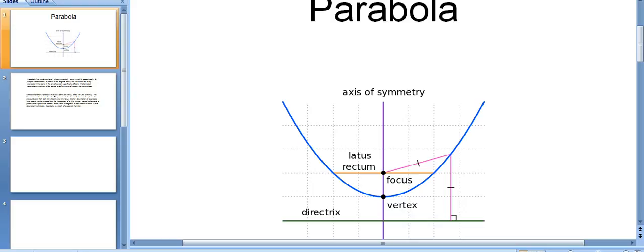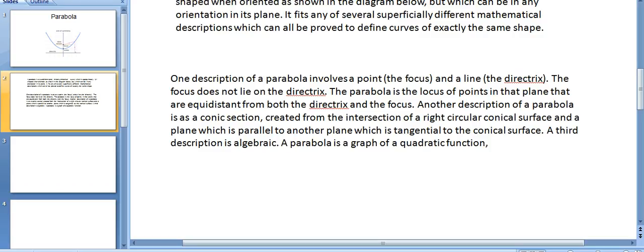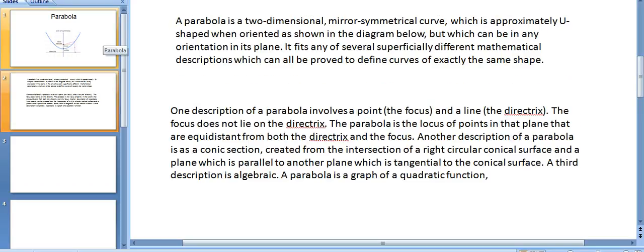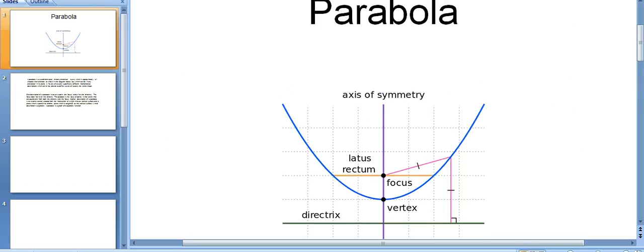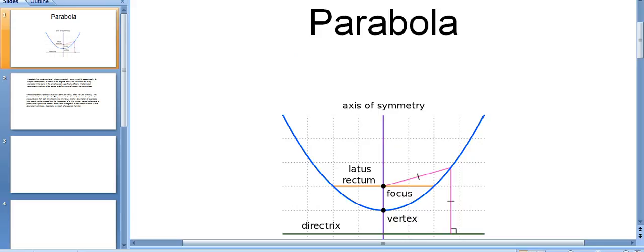It has two points - one is vertex and one is focus. The main basics of the parabola are the main key points that are available in this graph with this U-shape.